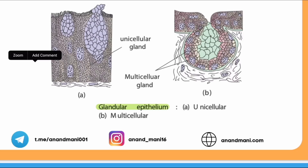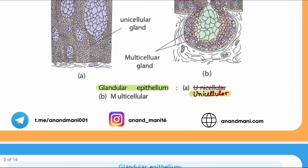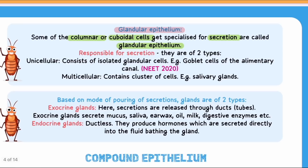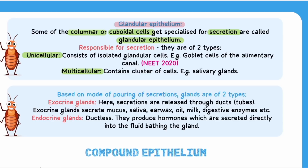Another epithelium is glandular epithelium. If a single cell behaves like a gland, it forms unicellular glandular epithelium. If many cells secrete like a gland, they form multicellular glandular epithelium. Both can be columnar or cuboidal. Examples include goblet cells in the alimentary canal (unicellular) and salivary glands (multicellular). Based on mode of secretion, glands are of two types: exocrine glands, which secrete through ducts (mucus, saliva, earwax, oil, milk, digestive enzymes), and endocrine glands, which are ductless and release secretions like hormones directly into the fluid.